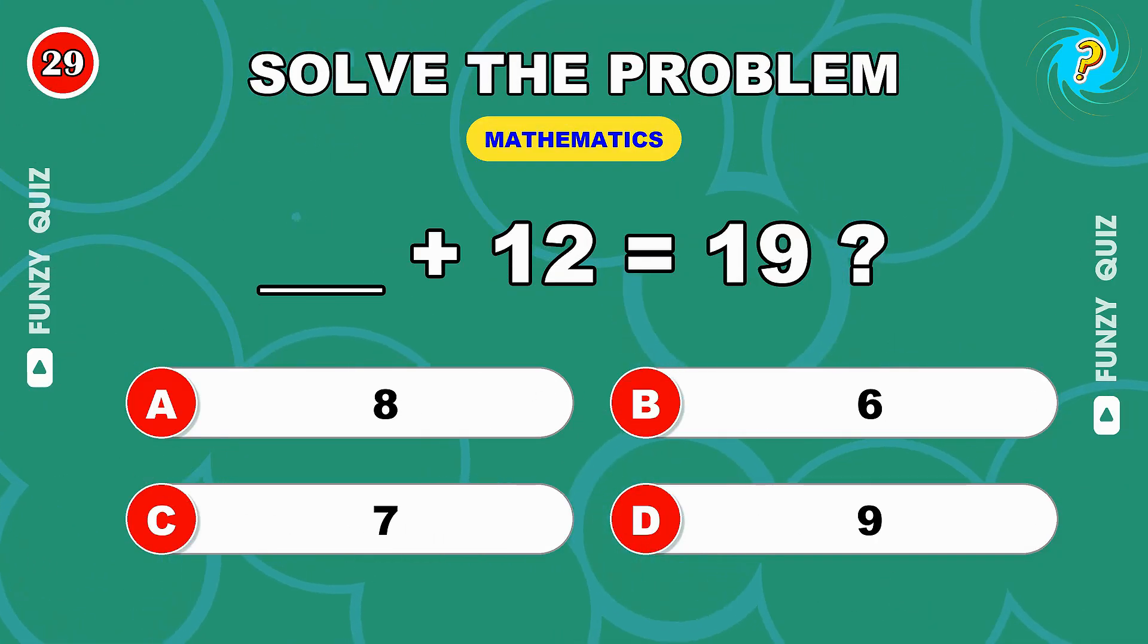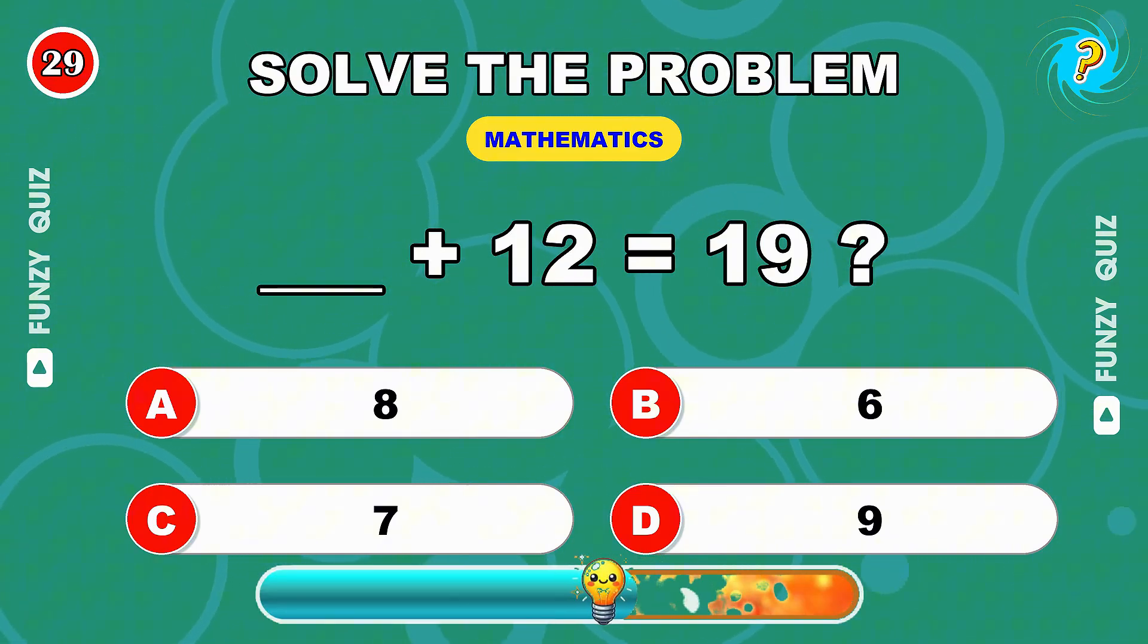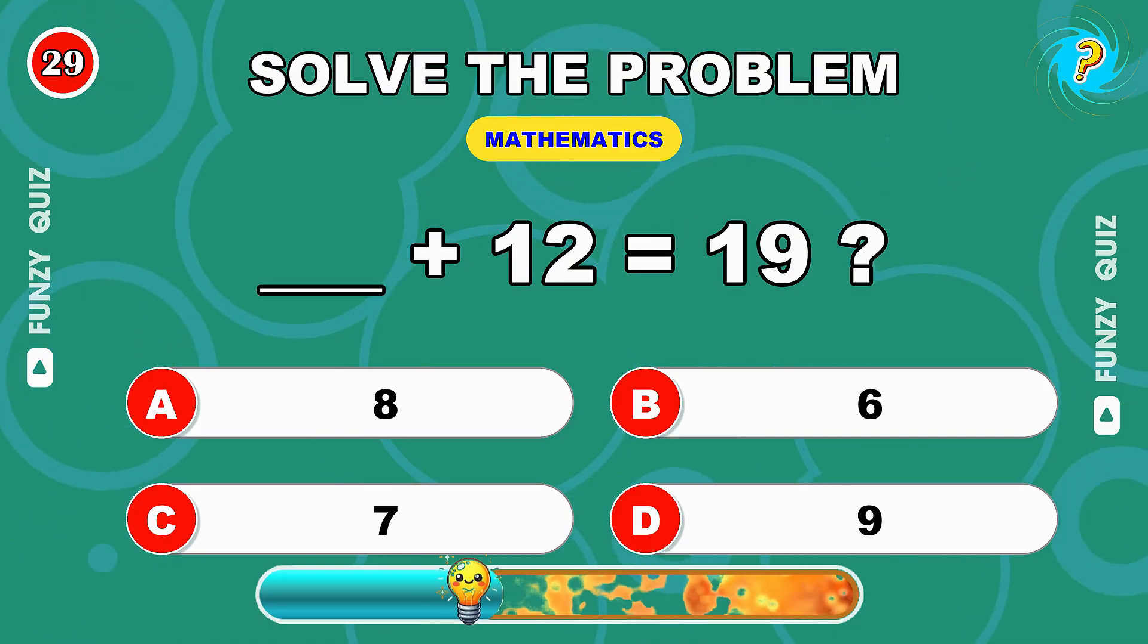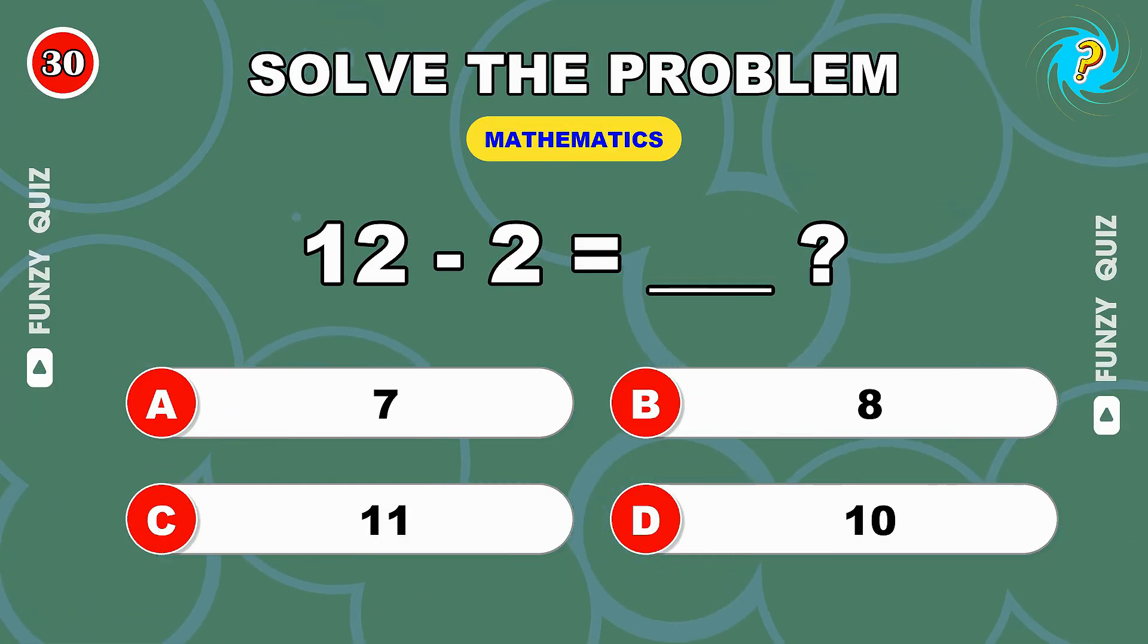What number plus 12 equals 19? 7, you got this. 12 minus 2 equals what? 10.